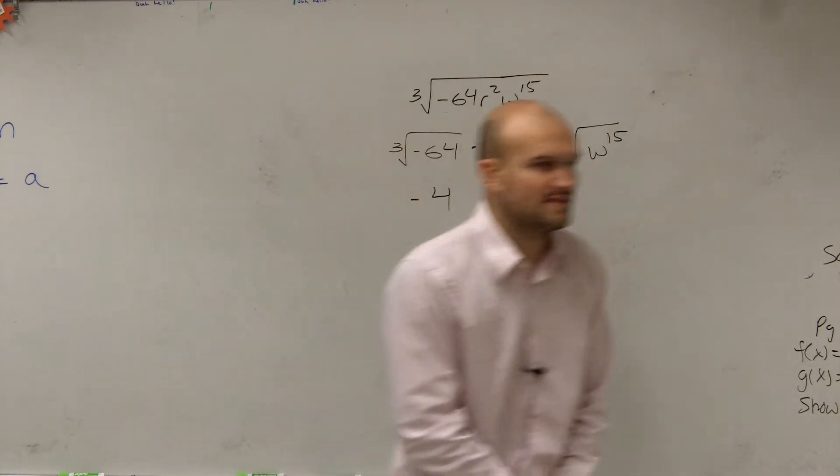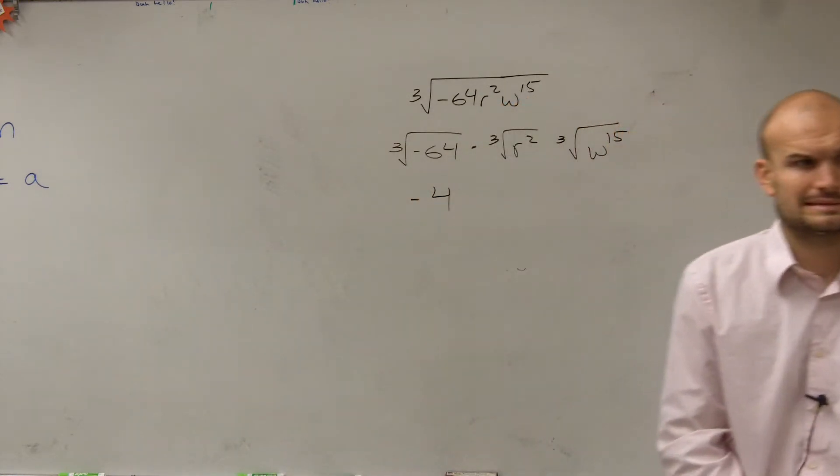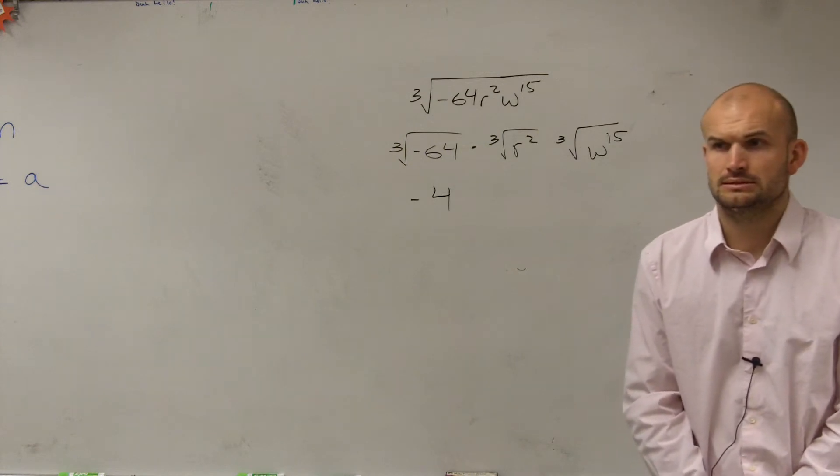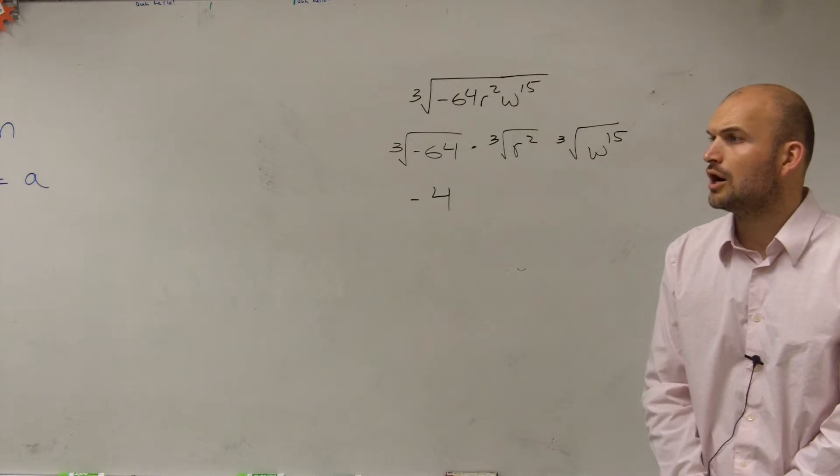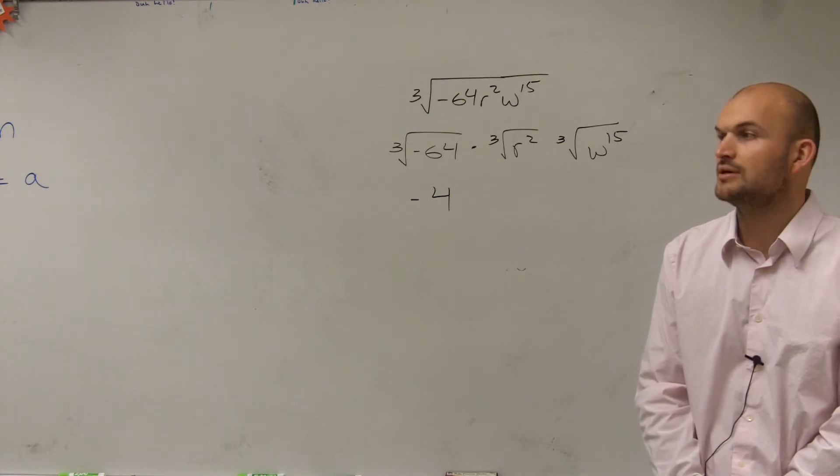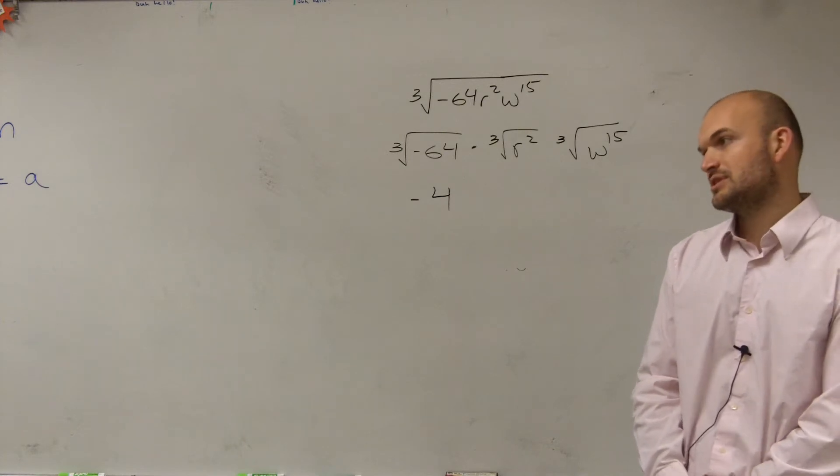What number multiplied by itself three times gives you r squared? No clue. r. Oh, yeah. Hmm, I'm not really too sure. r to the negative first? r to the negative first would be negative 1 times negative 1, which is positive 1, times negative 1 again, which would just leave you with negative 1.